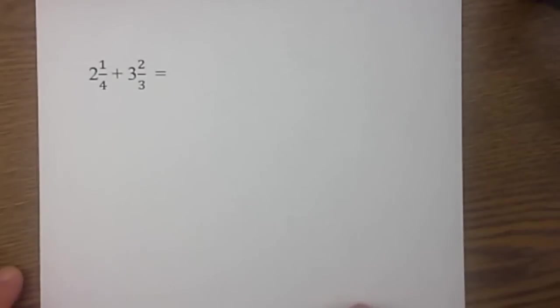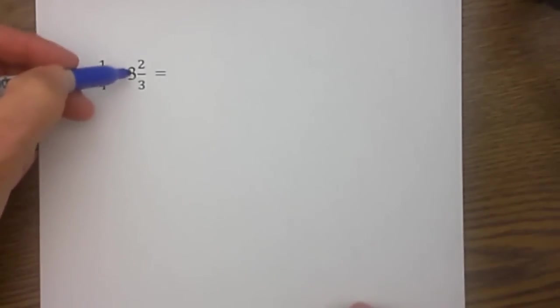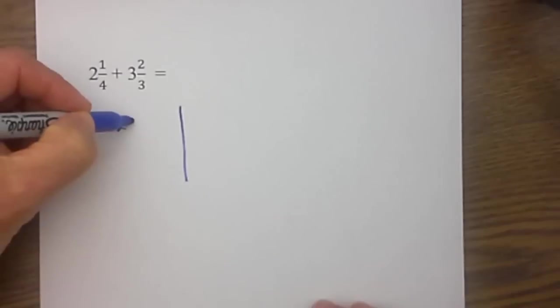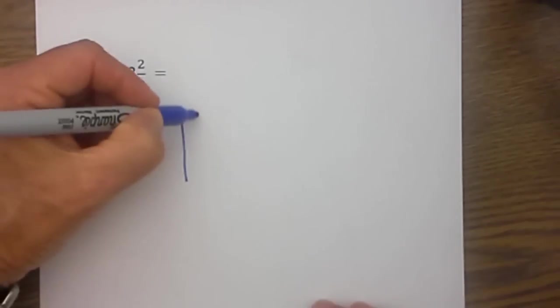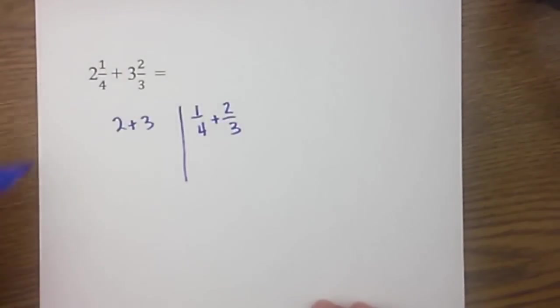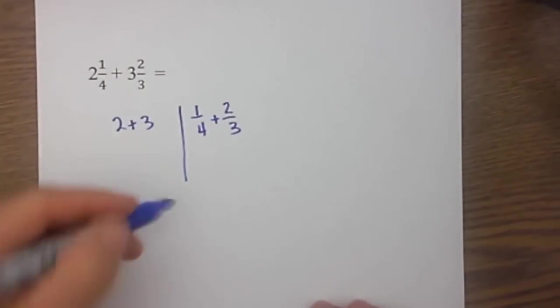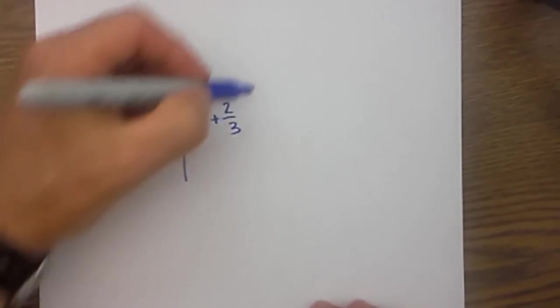Now let's work another example. We have 2 and 1 fourth plus 3 and 2 thirds. I will draw a line and put the whole numbers on the left and the fractions on the right. So I have just rewritten it 1 fourth and 2 thirds on the right and the whole numbers on the left. I am then going to always start on the side of the fractions and I need to find a common denominator.